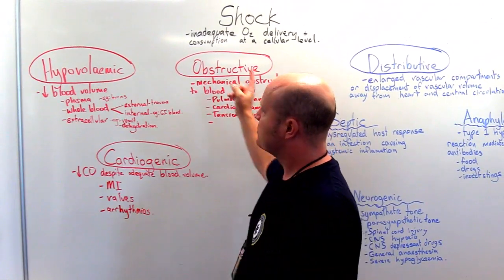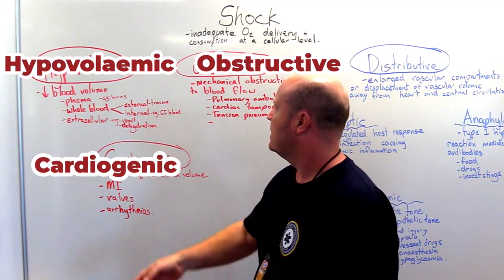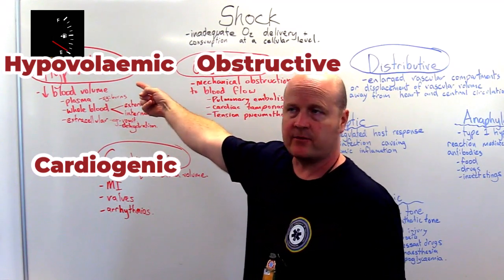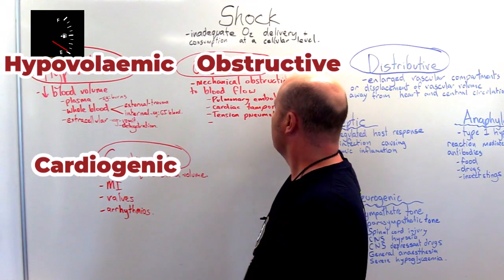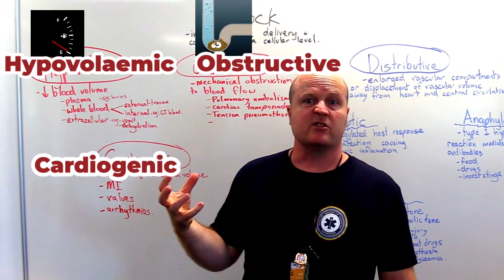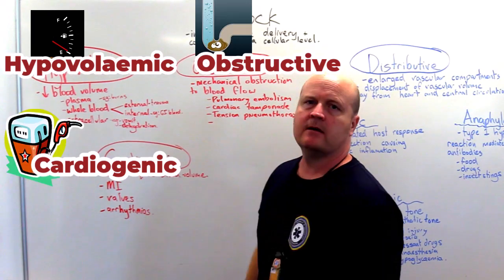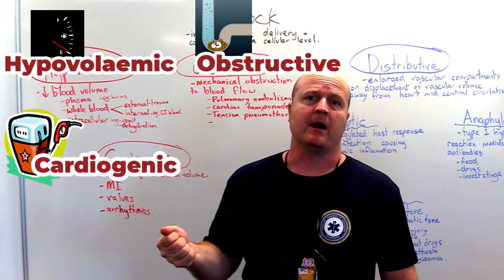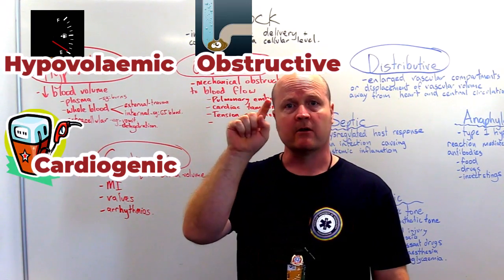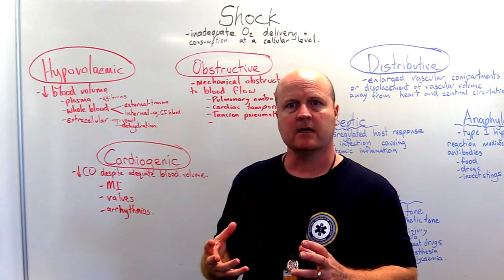So these three — if you think about a petrol station: hypovolemic, we're running out of fuel; obstructive, there's a blockage in our pipes; and then cardiogenic, there's a problem with the pump. So those are the first three types of shock.